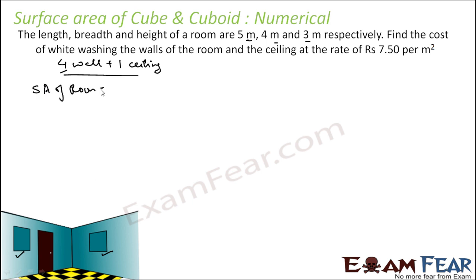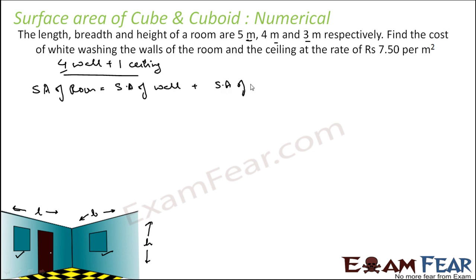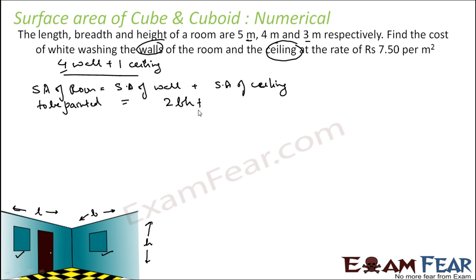The surface area of the room to be painted is the surface area of all four walls plus the surface area of the ceiling. We say 'room to be painted' specifically because the flooring is also part of the room but does not need painting. Two walls have dimension breadth × height, so 2BH, and two walls have dimension length × height, so 2LH. The ceiling is L × B.